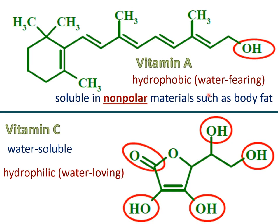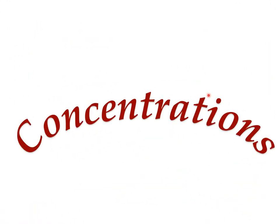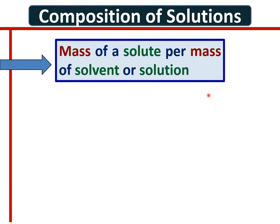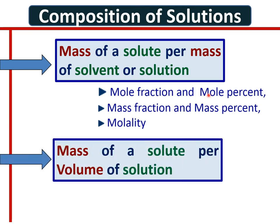Now we will introduce the terms of concentrations. Concentrations are classified according to the amount of solute in a given amount of solvent. Category one is mass per mass — mole fraction, mole percent, mass fraction, mass percent, and molality. Category two is mass of solute in a given volume of solution — molarity and normality.